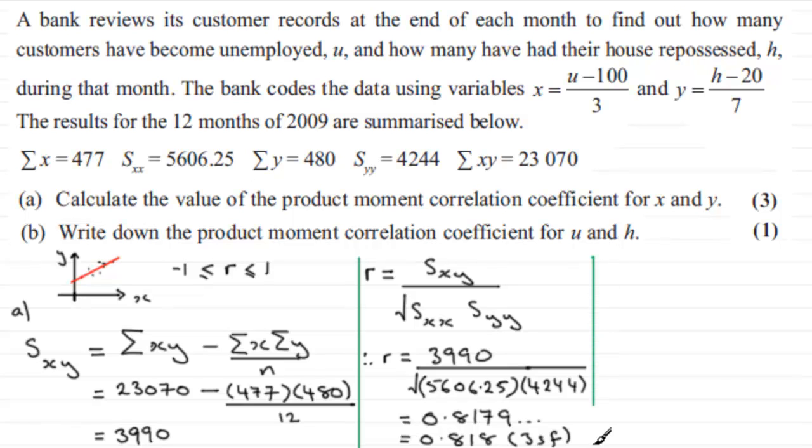Now we move on to the second part, part B. It does say write down the product moment correlation coefficient for u and h for one mark, so it's got to be easy. Well, it turns out that it's going to be exactly the same even though we're using a transformation here.